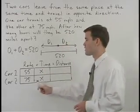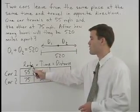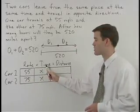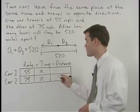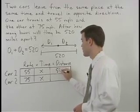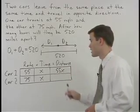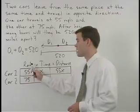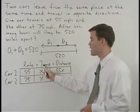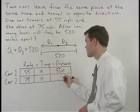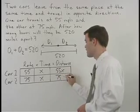The distance for the first car will then be the rate of the first car times the time of the first car, which is 55 times x or 55x. The distance for the second car will be the rate of the second car times the time of the second car, which is 75 times x or 75x.